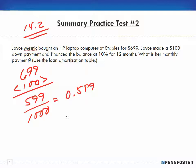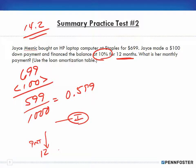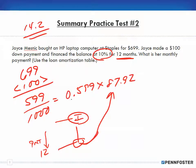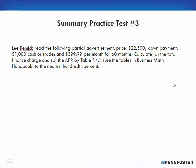Looking at the table, interest rates are across the top and number of payments down the side. For ten percent and twelve months, we cross-reference those values and find eighty-seven dollars and ninety-two cents per thousand. We multiply zero point five nine nine by eighty-seven ninety-two, which gives us a monthly payment of fifty-two dollars and sixty-six cents.